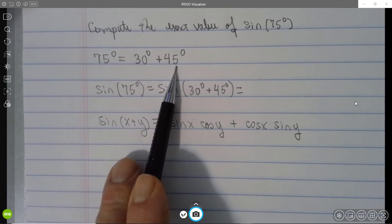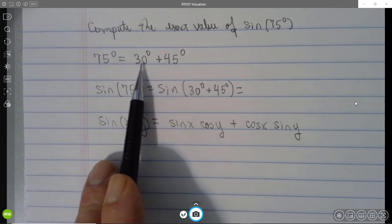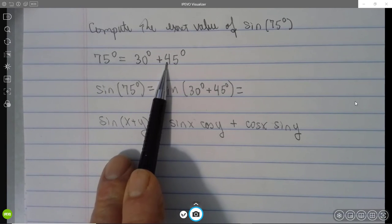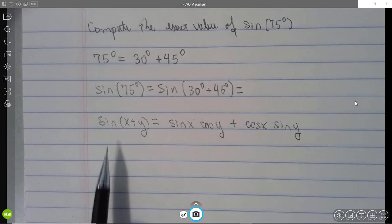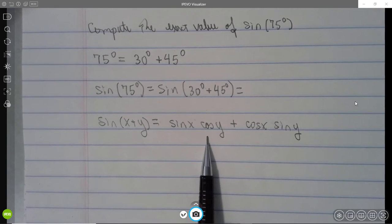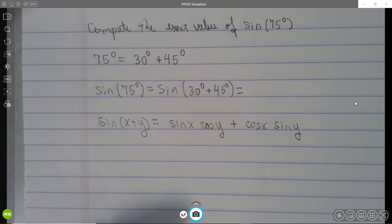And 30 degrees and 45 degrees are two of the special angles. We know both the sine and the cosine exactly for both 30 and 45 degrees. So we can use that along with our sum formula to compute this value exactly.